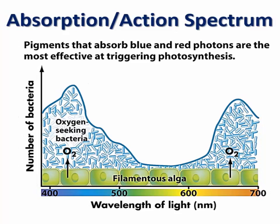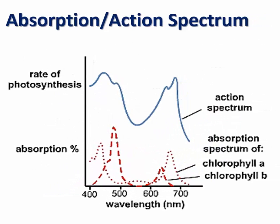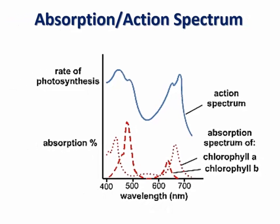If we plot the rate of photosynthesis or any biological activity directly related to photosynthesis against wavelength, we get what we call an action spectrum. This plot has characteristically two peaks, one corresponding to blue light and the other to red light. And when we superimpose the action spectrum and the absorption spectrum of chlorophyll A and B, we can clearly see that the blue and red lights are directly responsible for photosynthetic activities in organisms.